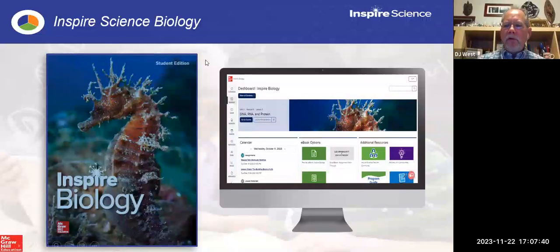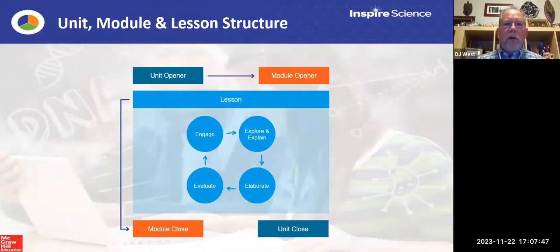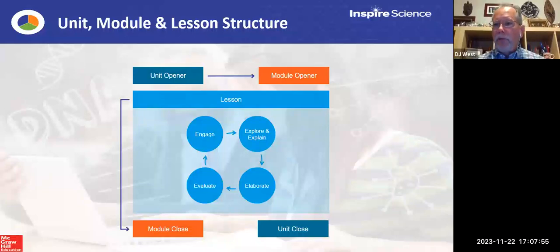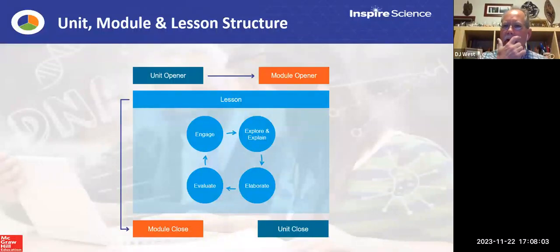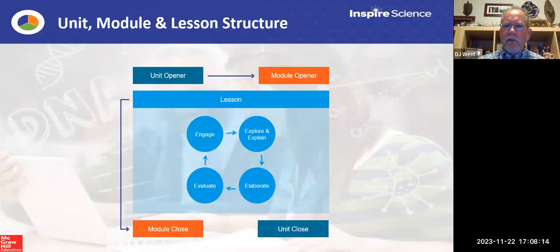When we go into the program, the first thing to remember at the high school level is the structure. We divided it into units. Those units contain three, four, or five modules. If you want to think of a module as a chapter, you can. Inside that module are three, four, or five lessons. The number of modules in the unit and the number of lessons in the module all depend on the standards being covered and how deep we need to go.